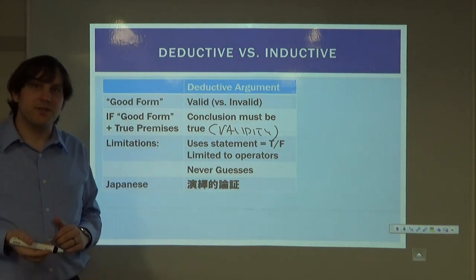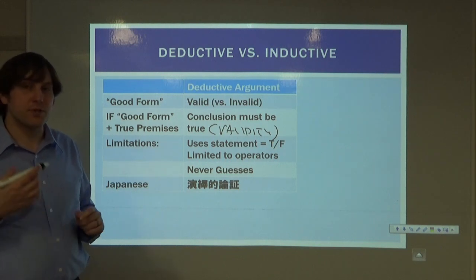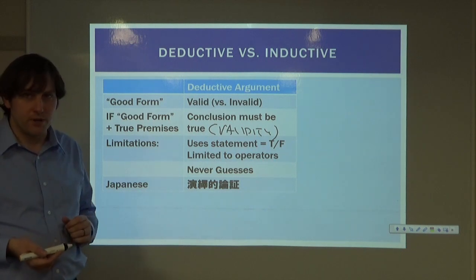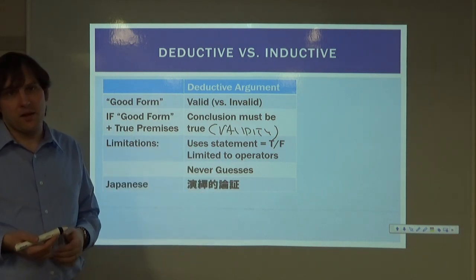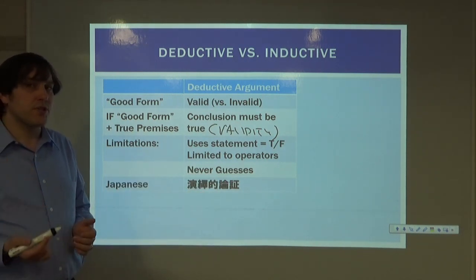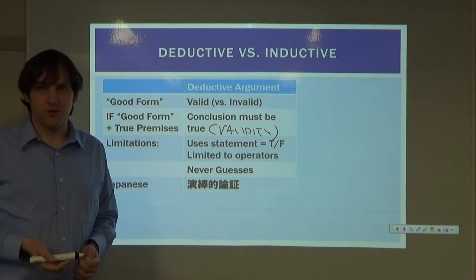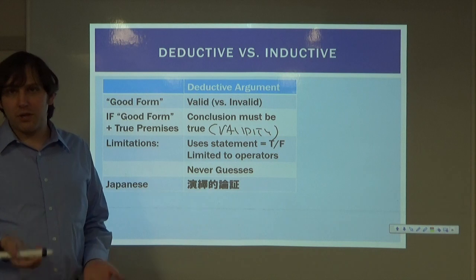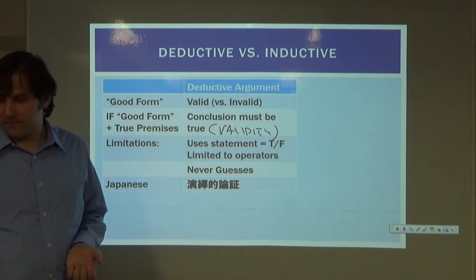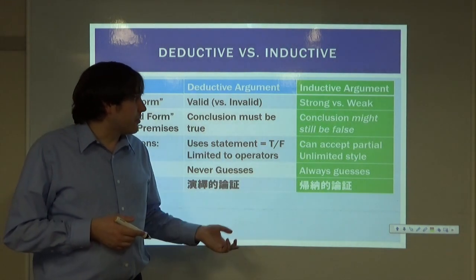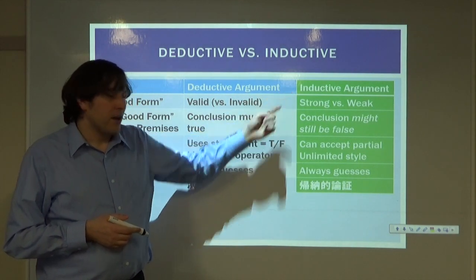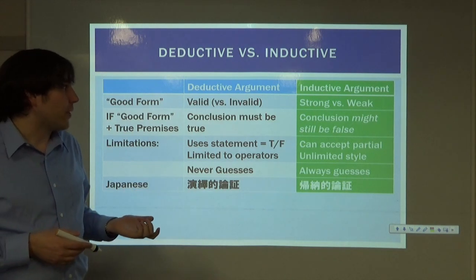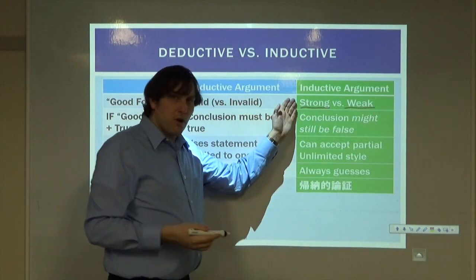One limitation is that every statement in a deductive argument must be either true or false, and we're limited to a small set of operators. Another valuable feature is that it's never a guess — it always depends on whether we follow the rules. Now let's compare that with inductive arguments. Inductive arguments are not valid or invalid; instead, they are strong or weak.